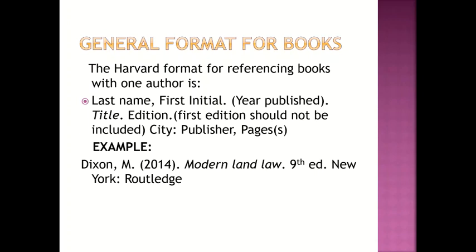Now let's look at the general format for books. For books, you will be stating an additional element — the edition. If the book is the first edition you may not need to include it, but if it's the second edition and so on, it is important that you include it. The format is: Last Name, First Initial. Year Published. Title. Edition (first edition should not be included). City: Publisher, Pages. Study the example — you will observe that the title is italicized, which is very important.